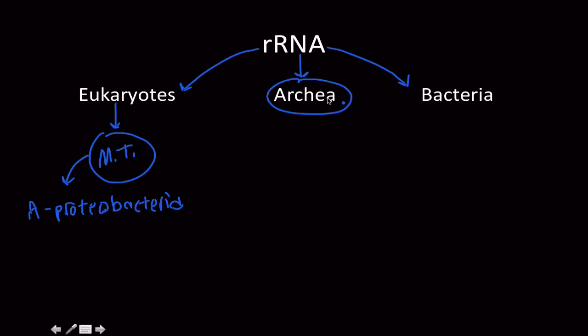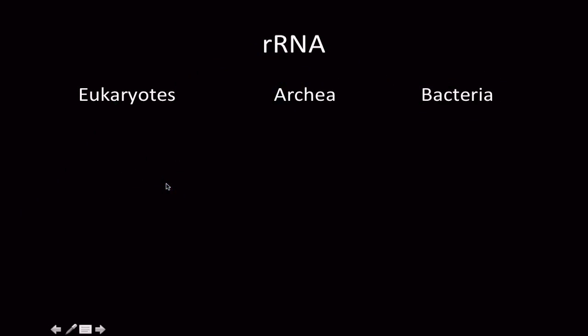So alpha-proteobacteria, archaea have their own unique ribosomes, and then bacteria have their own unique ribosomal RNA. And that is what separates all of these phyla. This is also why you can take an antibiotic and it may inhibit the ribosomal RNA of bacteria, but it's not going to do anything to you or even to your mitochondria because there is a difference between those two. And that was a huge discovery.